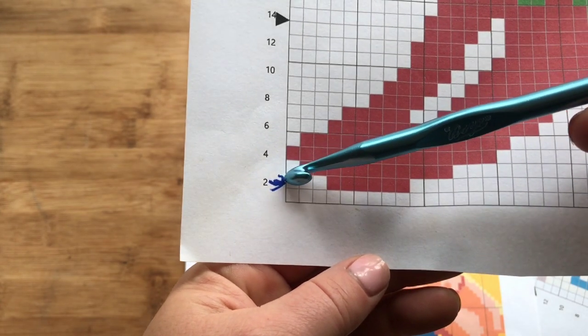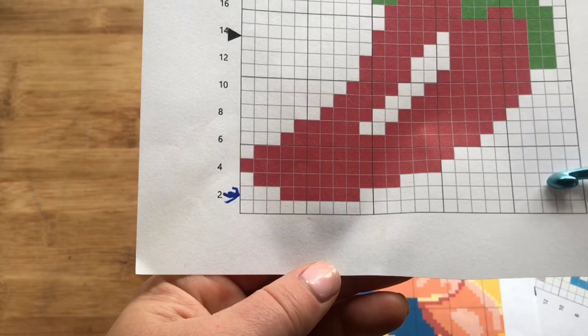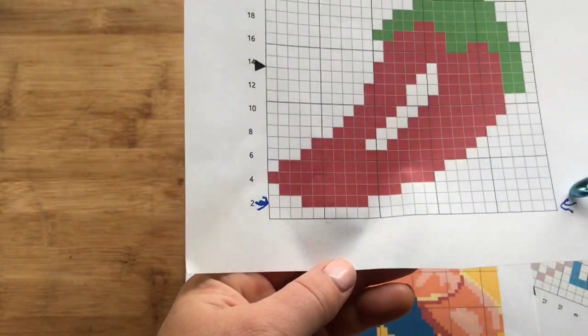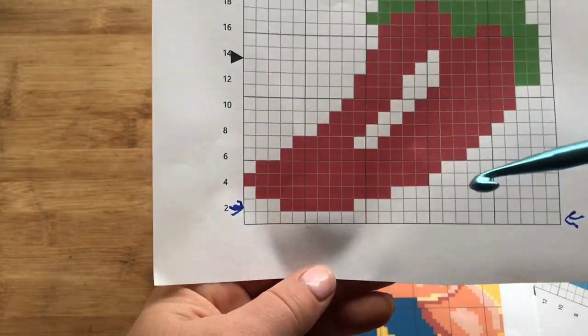When you're doing your graphs, you're going to start at the bottom right hand corner and you're going to work one direction. When you get to this direction you'll make your chain, then you'll work back in the other direction.